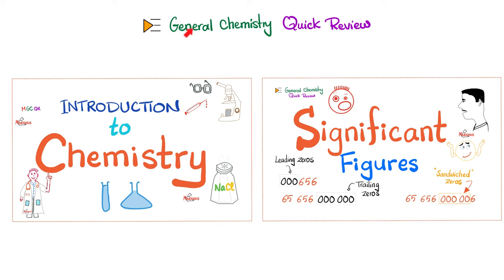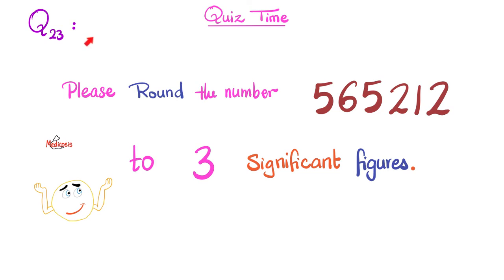Please watch the videos in this general chemistry quick review playlist in order. Let's start by answering the question in the previous video. These questions go in series — you'll find the first two questions in the first video, and then question three in the video after this, and so on. Can you round this number to three significant figures? Please pause and try to answer this yourself. I'll show you how a doofus student will answer it, and then I'll tell you how an excellent student answers this.